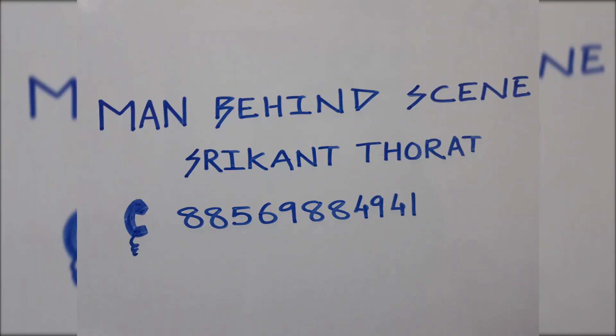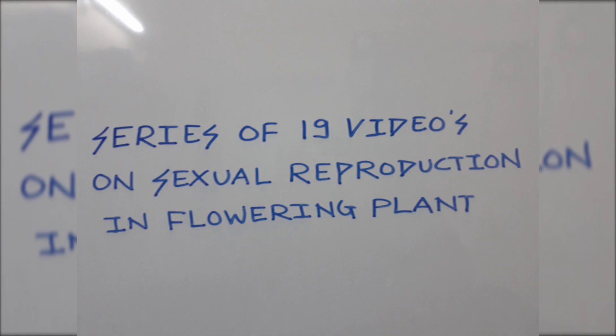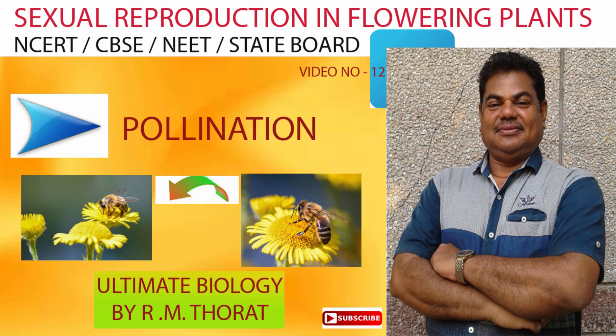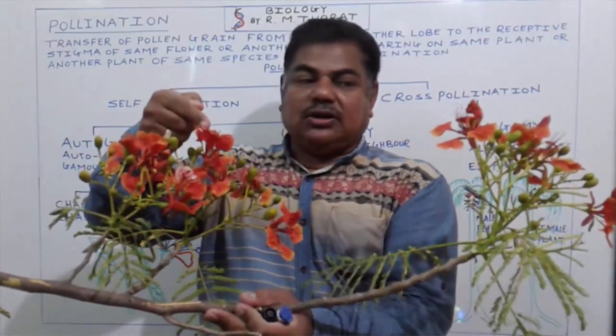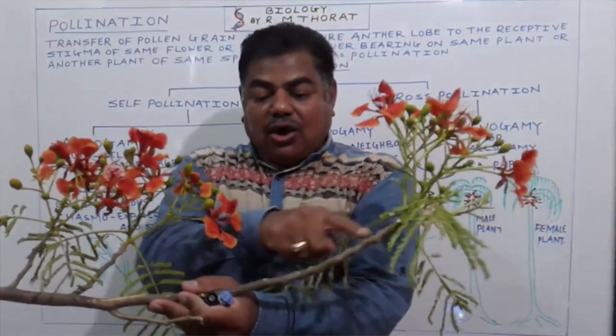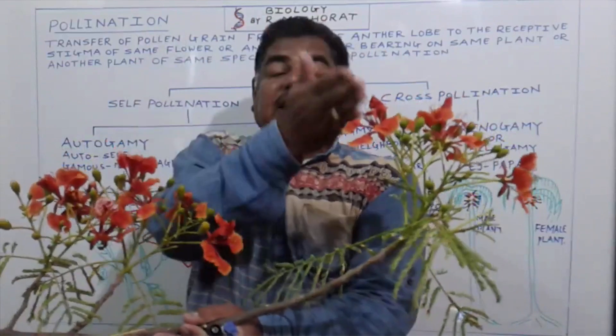Transfer the pollen grain from the mature core of this flower to receive the stigma of another flower. But these both flowers are bearing on the same flower, same fruit. Such type of modification we call it as a citronugan.